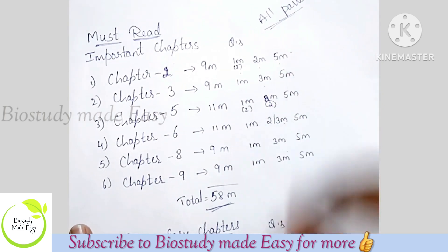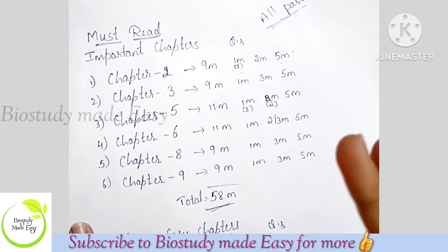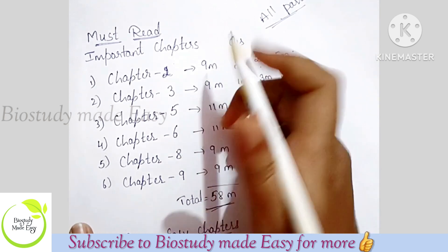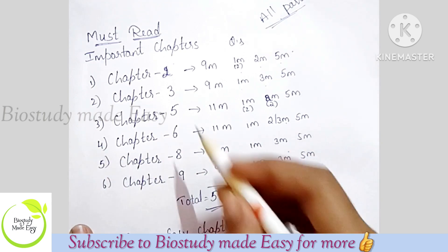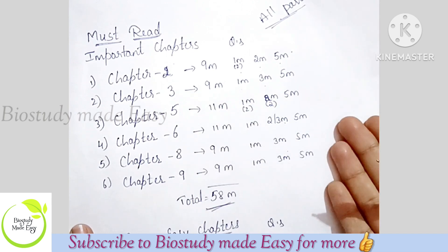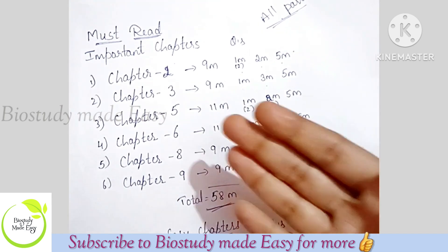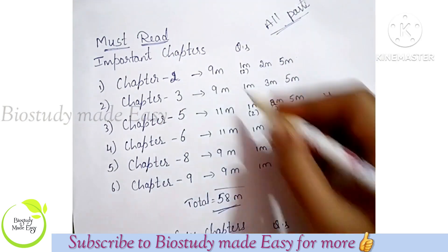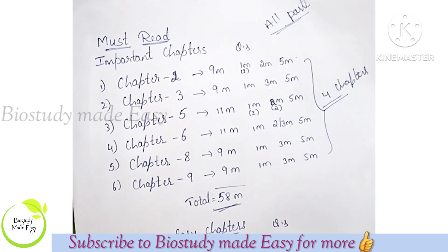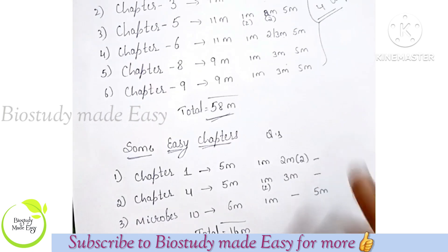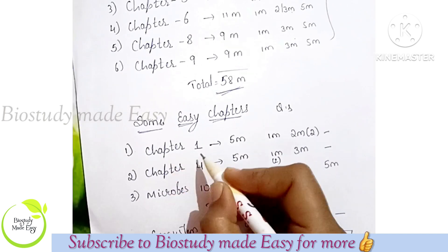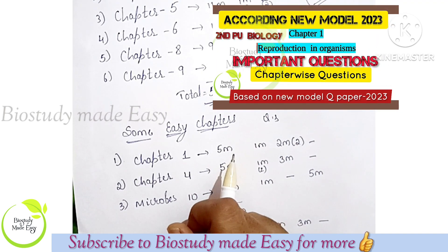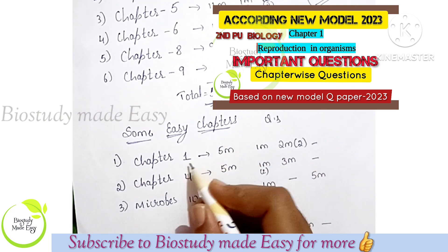We are not going to aim for 70 out of 70 — we just want to score good, 60 plus or 65 plus. You need to select chapters like Molecular Basis of Inheritance, Principles of Inheritance, and Strategies for Enhancement of Food. If you select the right chapters, at least you will have four chapters covered. If you have questions, I will upload a one-shot video on the channel.